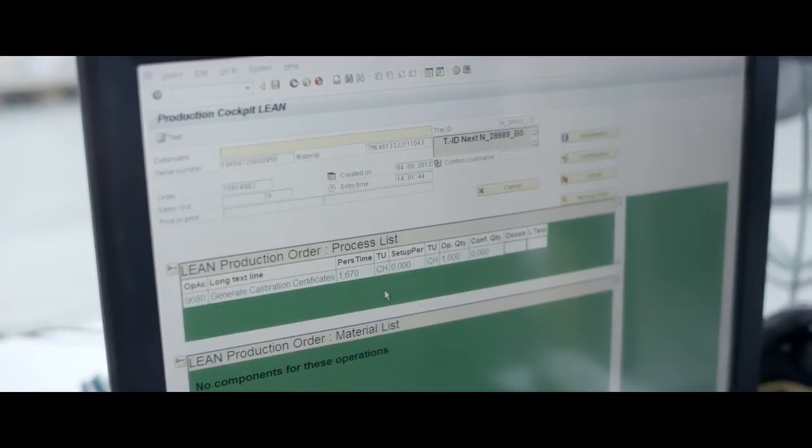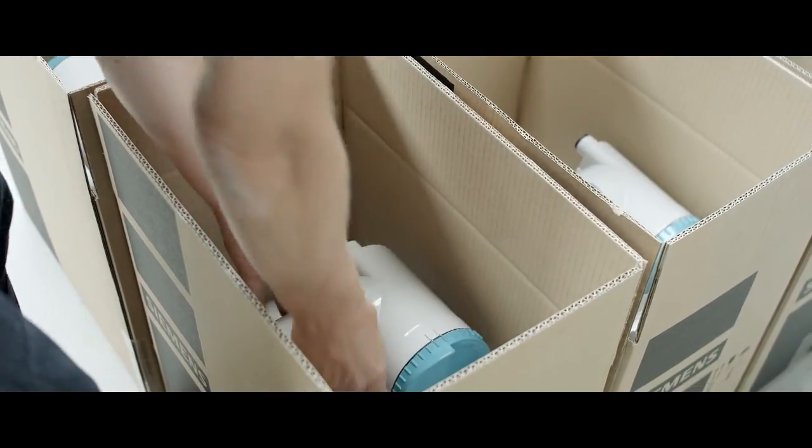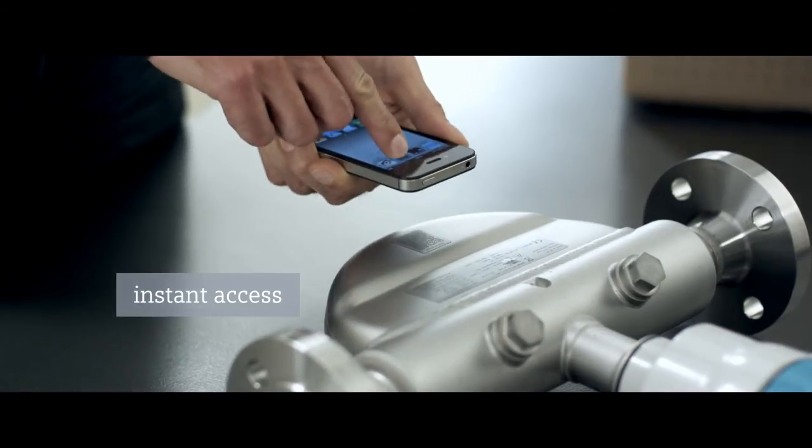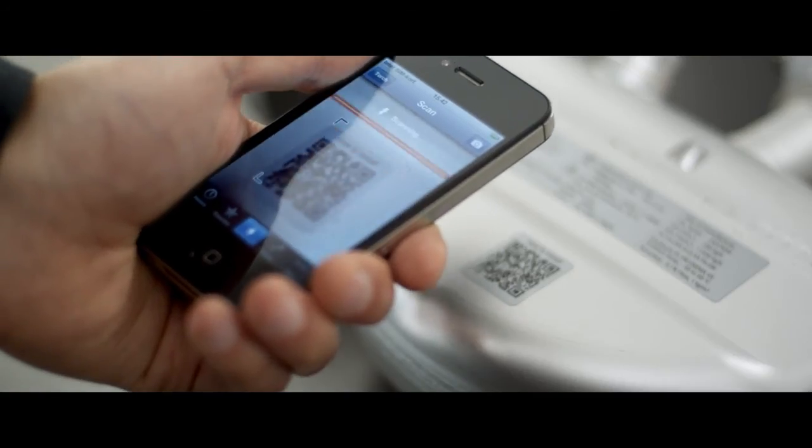The Siemens flow meter can be used as soon as the customer receives it. By means of the QR code on the meter, you can easily access technical data, calibration and installation instructions.